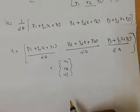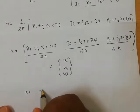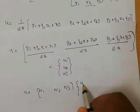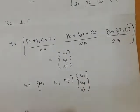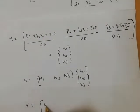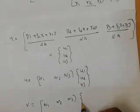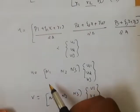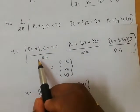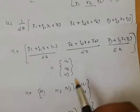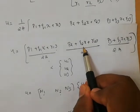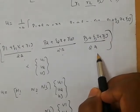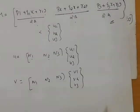This equation is in the form U = [N1, N2, N3] times [U1, U2, U3]. Similarly, V = [N1, N2, N3] times [V1, V2, V3]. From this, the shape functions are: N1 = (P1 + Q1*x + R1*y)/2A, N2 = (P2 + Q2*x + R2*y)/2A, and N3 = (P3 + Q3*x + R3*y)/2A.